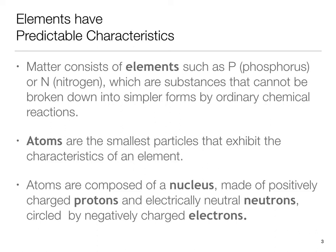Atoms are the smallest particles that exhibit the characteristics of an element. As difficult as it may be to imagine, when you look at a solid object, all matter is composed of tiny, moving particles separated by space and held together by energy. Atoms are composed of a nucleus made of positively charged protons and electrically neutral neutrons, circled constantly by negatively charged electrons, which are tiny in comparison to the other particles and orbit the nucleus at the speed of light.